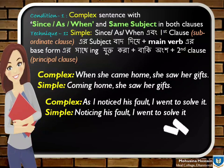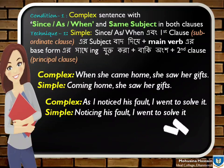আবার যখন Simple থেকে Complex করতে হয়, তখন আমরা Principal Clause এর দিকে Concentration দিবো। Simple এর Principal Clause এর Subject, Complex এর Subordinate Clause এর Subject হয়ে যাবে। Principal Clause এর Verb যে form এ থাকবে, Non-finite Verb টিকে ঠিক সেই form এ initiate হবে। আর যেহেতু এটি Complex তাই Changed Clause এর শুরুতে Since, As, When লিখতে হবে। আর এখানে Principal Clause এর কোনো পরিবর্তন হবে না।